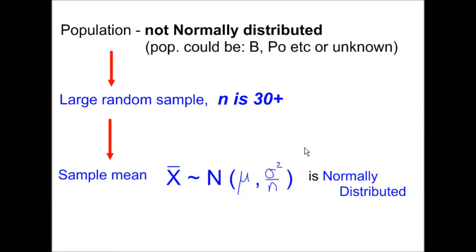So the CLT states that starting with some unknown population distribution, you take a large random sample — it must be random — and the sample mean will follow a normal distribution.